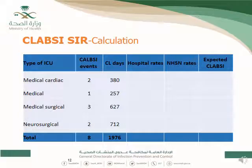Here is a hypothetical example for CLABSI SIR calculation. Surveillance data from four adult ICUs — medical ICU, medical cardiac ICU, medical surgical ICU, and neurosurgical ICU — are collected. For each ICU, CLABSI events and central line days are recorded during the surveillance period.